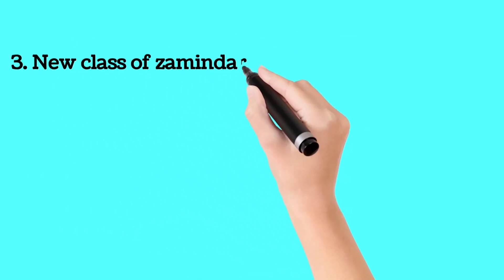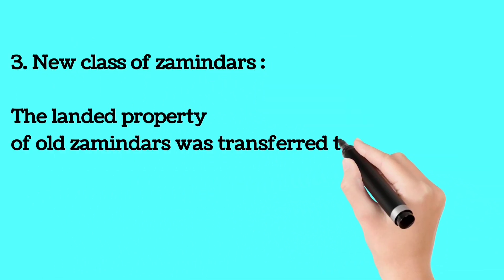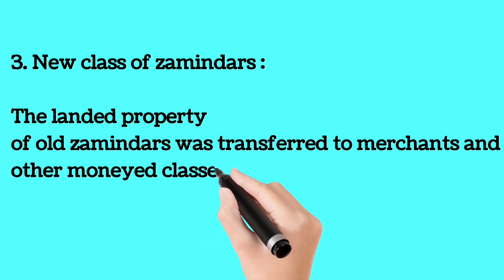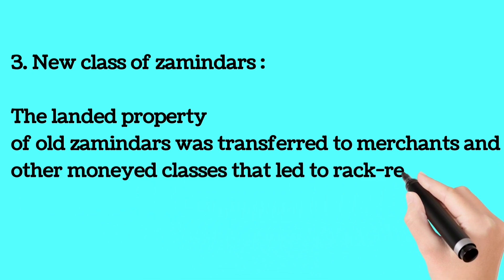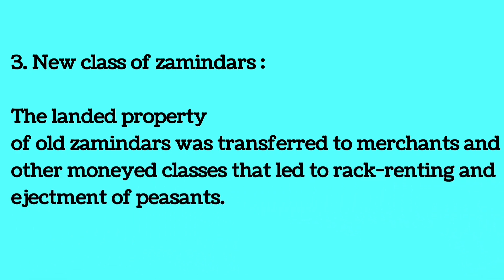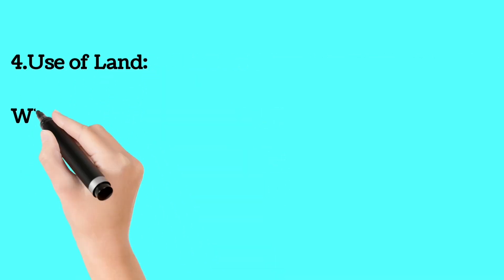Three: New class of zamindars. The landed property of old zamindars was transferred to merchants and other moneyed classes, which led to rack renting and the ejection of peasants.